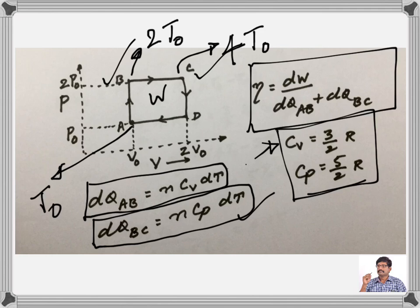During AB, temperature change is 2T0 minus T0. During BC, the temperature change is 4T0 minus 2T0. Let us apply this.